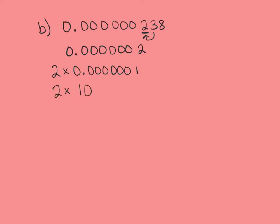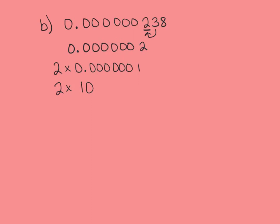This is going to be a very small power of 10. The simplest way is to count the number of places the decimal moves to get behind the 2 — that's 7 places. If I left that as positive 7, it would indicate a very large number, but this is actually a very small number, much smaller than 1. So this is 2 times 10 to the negative 7th power.